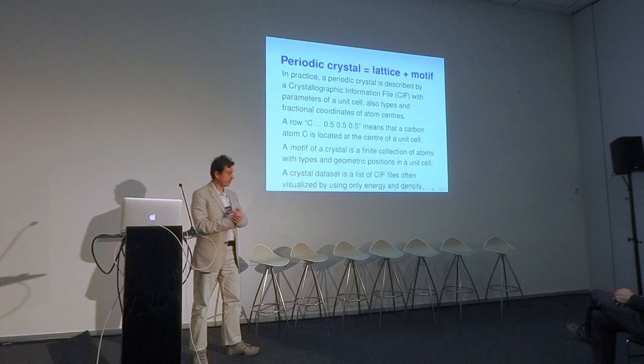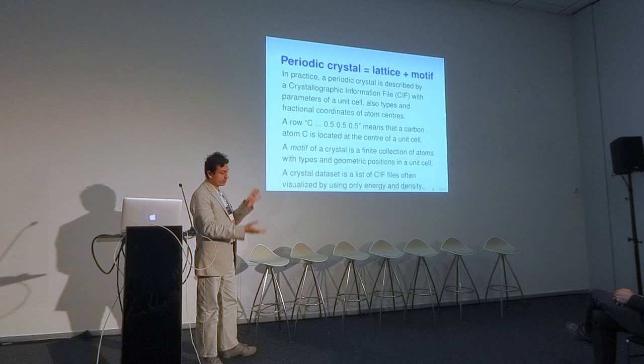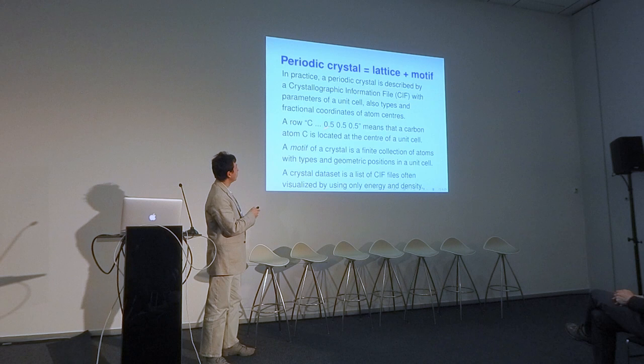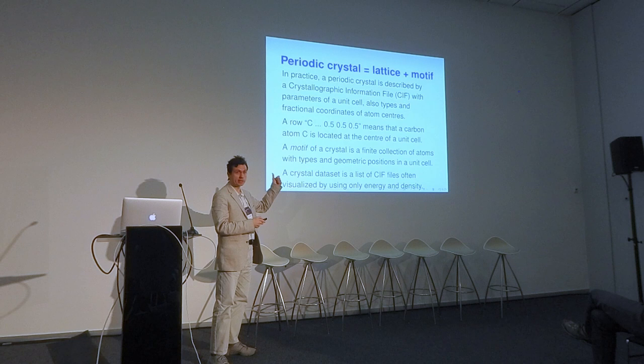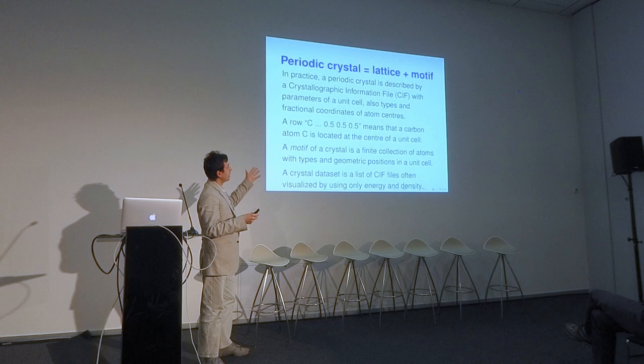A crystal is usually given in a simple form as a text file — a crystallographic information file — containing parameters of a unit cell: three lengths and three angles of a non-rectangular box, and fractional coordinates of every atom in the unit cell. For example, a row reading 'C, 0.5, 0.5, 0.5' means a carbon atom exactly in the center of the unit cell, because these are fractional coordinates of the parallelepiped unit cell.